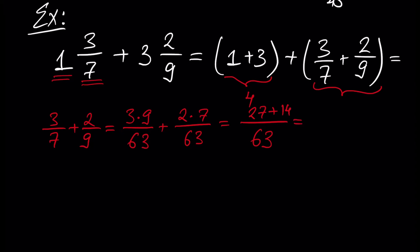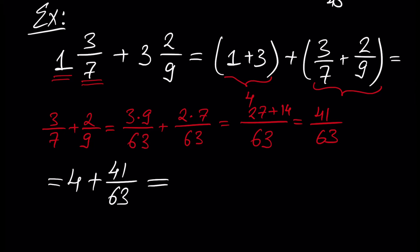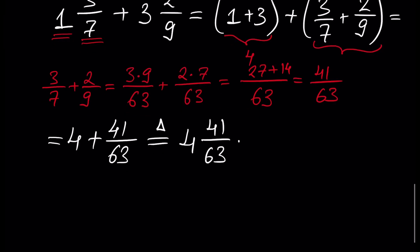That gives us 41 over 63. Our answer will be 4 plus 41 over 63, which by definition equals 4 and 41 over 63. And let's do the last example.